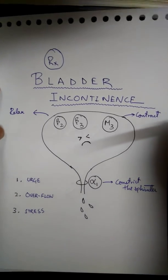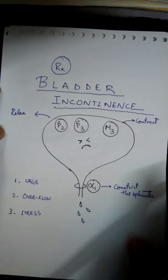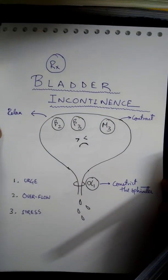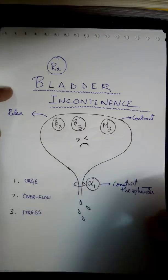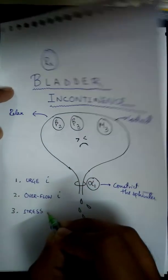This can be due to any defect in the bladder or the sphincter itself. According to the root cause, bladder incontinence can be three types: urge incontinence, overflow incontinence, and stress incontinence.